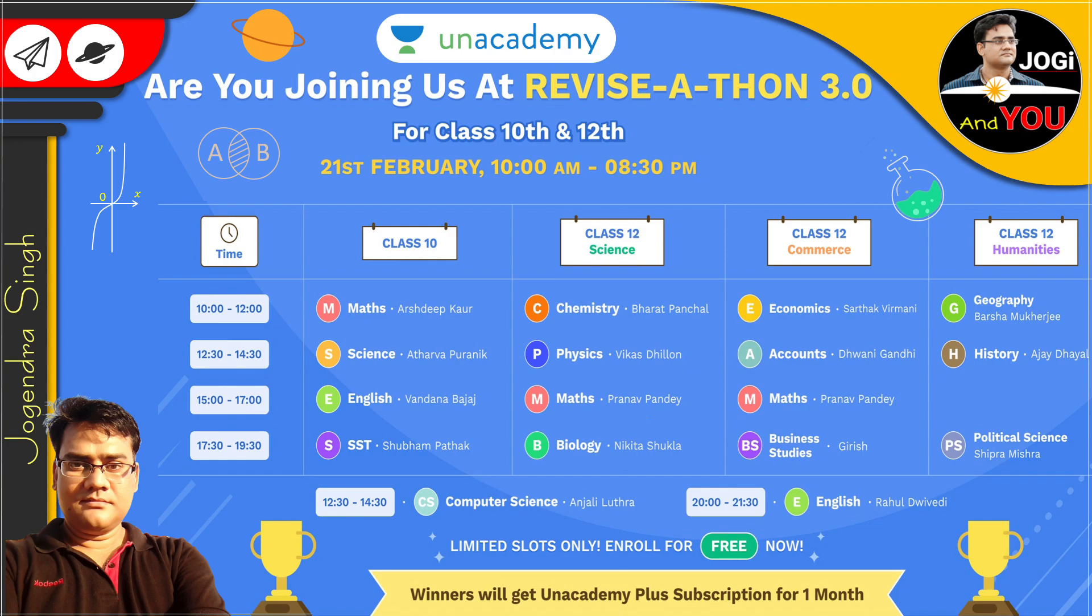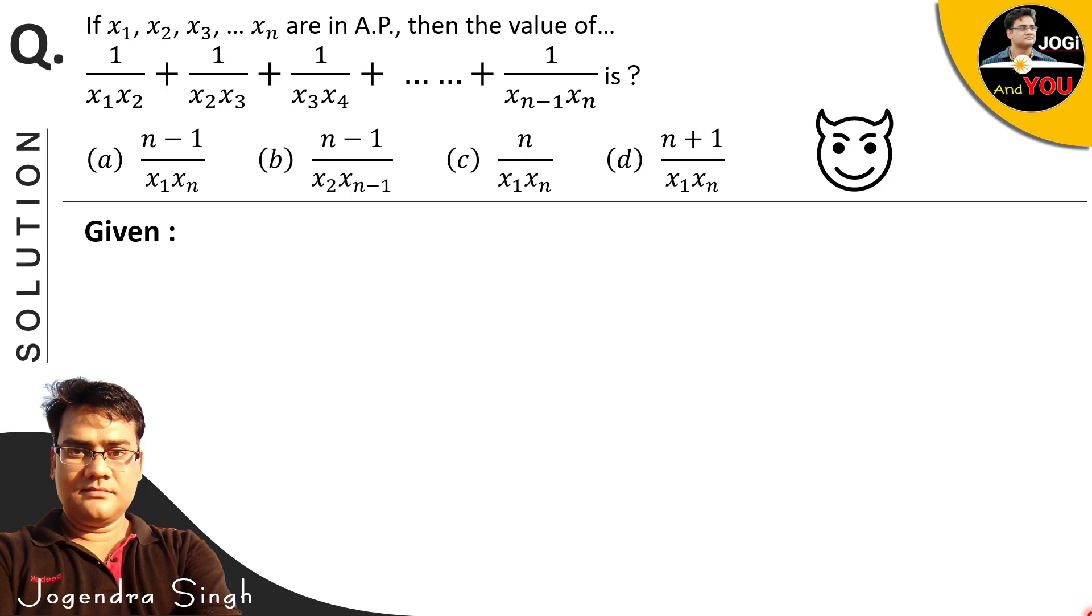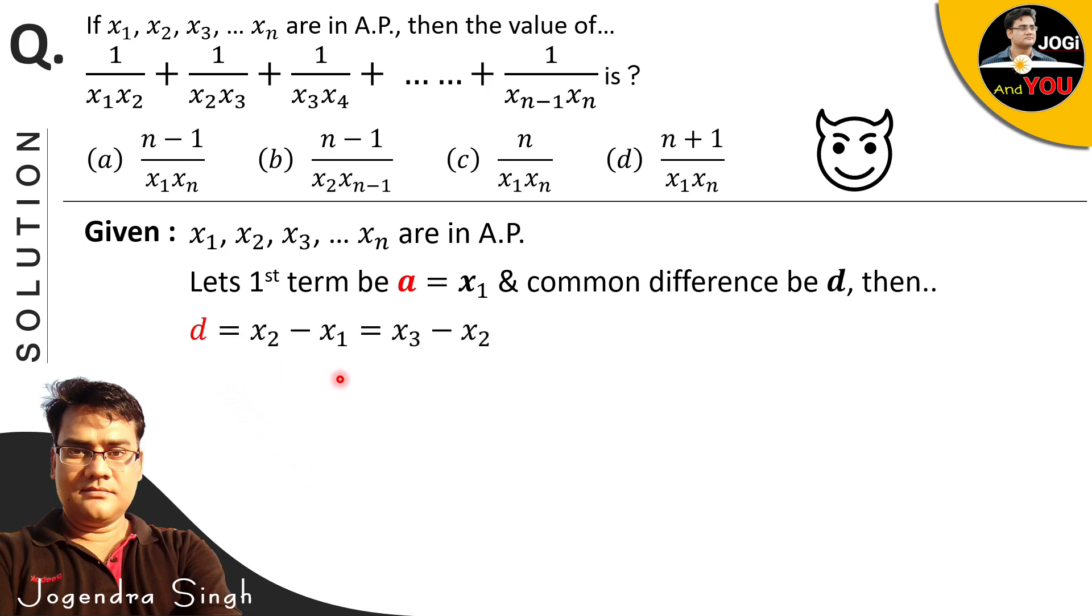Now let's come back to our current question. To solve this, first of all we collect the given things here. Given: x₁, x₂, x₃ till xₙ are in AP. When we talk about AP, we look at first term and common difference, at least these two things. So let first term a be x₁ and common difference be d. Then the value of common difference d is second term minus first term and third term minus second term and fourth term minus third term. So we have first term in the form of x₁ and common difference also.